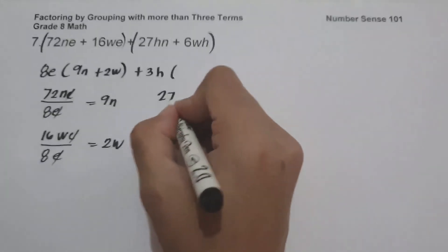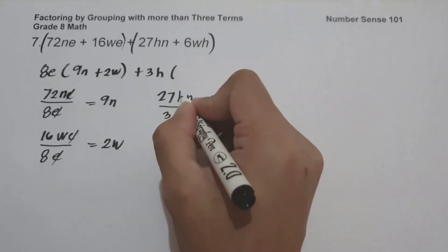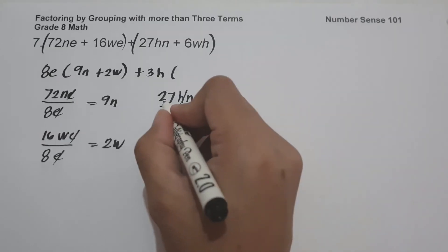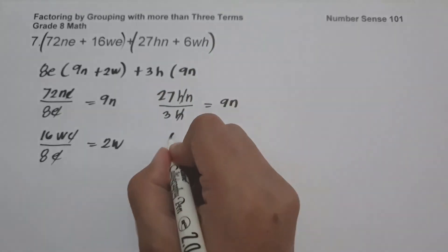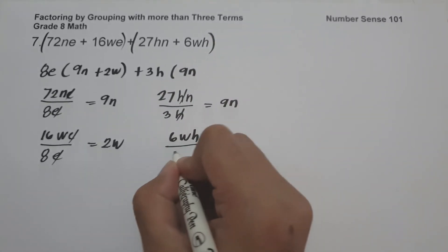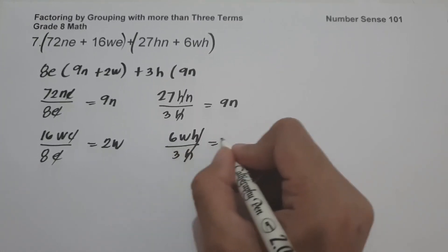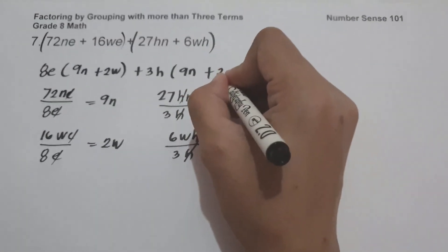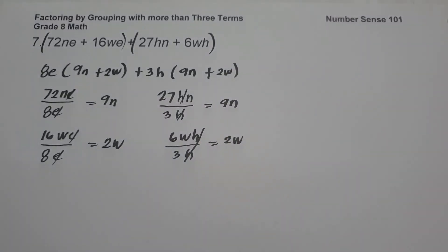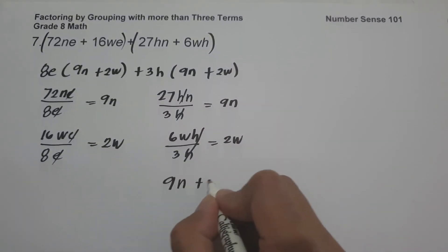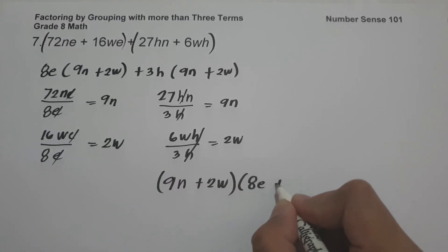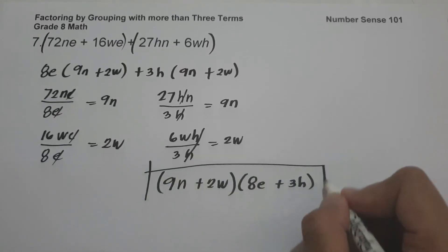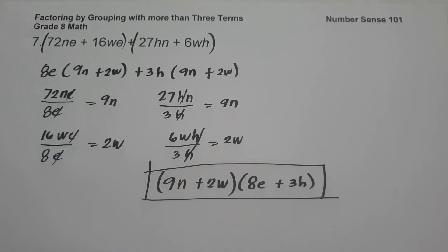So 27HN divided by 3H: cancel H, 27N divided by 3 gives 9N. Then 6WH divided by 3H: cancel, giving 2W. Therefore, the answer is (9N plus 2W) times the quantity (8E plus 3H). I hope you've learned from this video. Thank you so much for watching and God bless us all.